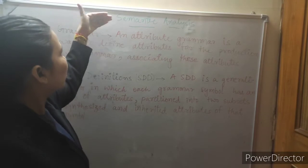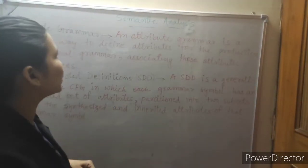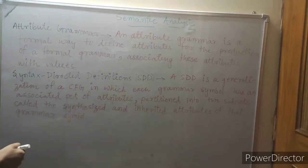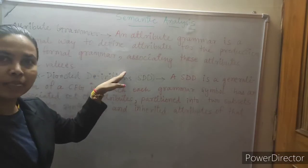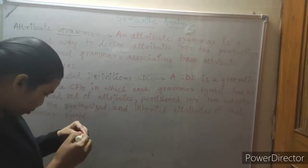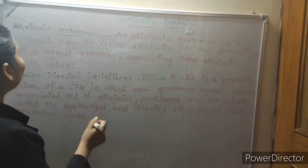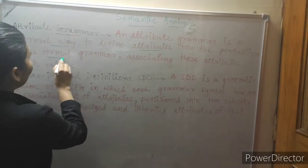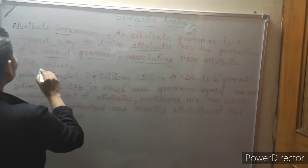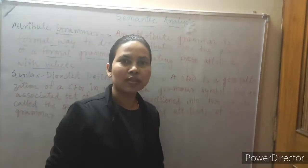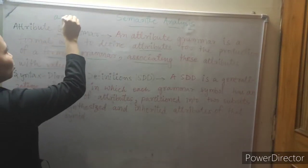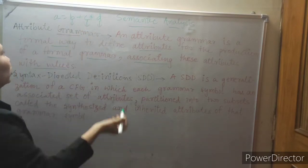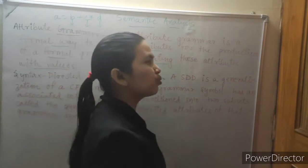Hi everyone, I am teaching semantic analysis for both UGC NET and GATE exams. Both exams have attribute grammars in the syllabus. Attribute grammar is a formal way — rules-based — to define attributes for the production of a formal grammar, associating these attributes with values. For example, E = B + C * D, where B, C, and D each denote some value. This is called attribute grammar.